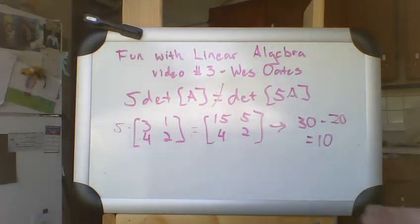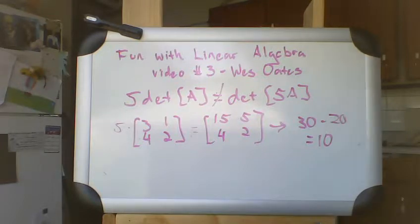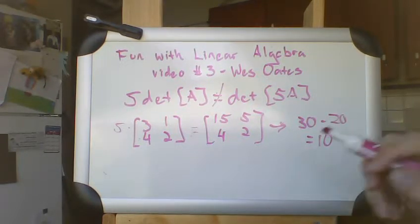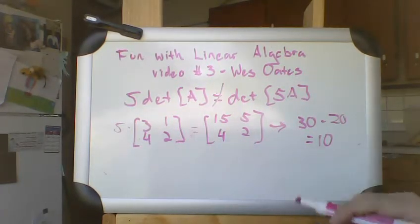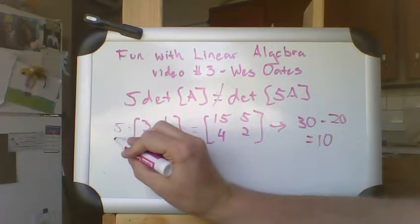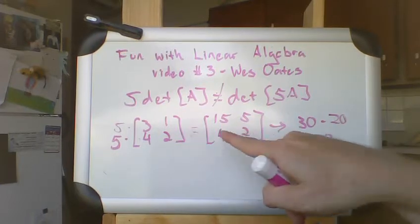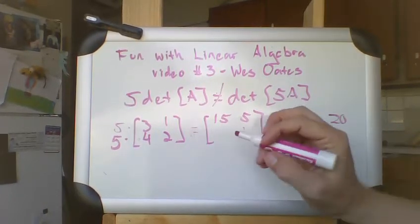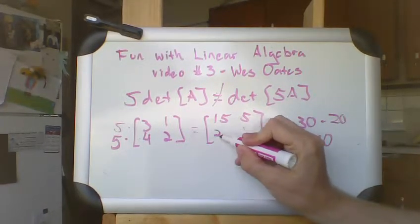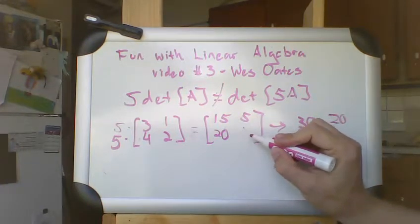Now, this illustrates what happens when you multiply a single row by a particular factor. If you were to imagine multiplying the entire matrix, you're actually multiplying not just one row, but you're multiplying every row. And so you're going to be multiplying the top row by that, you're going to be multiplying the bottom row by that, and that's what's going to get you to 20 and 10.